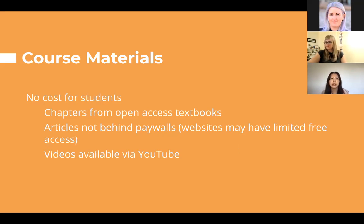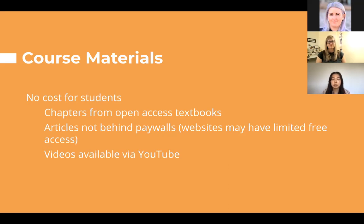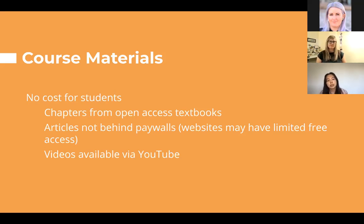Developing the class — one of our learning outcomes is recognizing the importance of open access information, so we try to keep that in mind as we think about readings. There is no cost for the students in terms of readings and class materials. We have chapters from open access textbooks for some of the weeks, articles that are not behind paywalls — from websites like Wired where there is a limit to the number of free articles available, but no upfront cost initially. And videos available via YouTube, things like TED talks. We have some things put together by the Wikimedia Foundation, all available in a format that is accessible to the students.